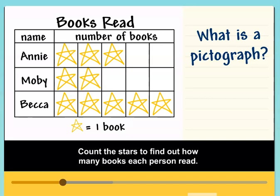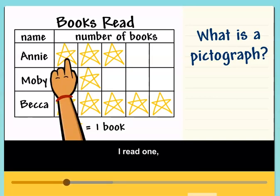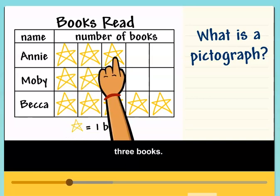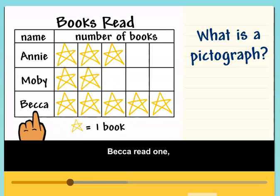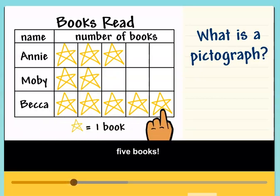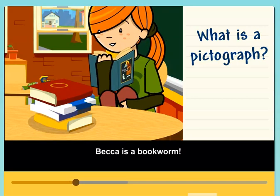Count the stars to find out how many books each person read. I read one, two, three books. Becca read one, two, three, four, five books. Becca is a bookworm.